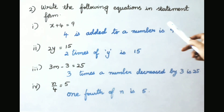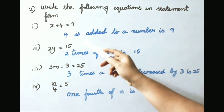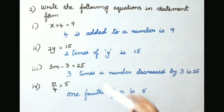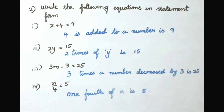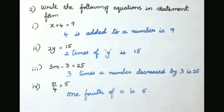Question 2: write the following equations in statement form. First, x plus 4 equals 9 — 4 is added to a number is 9. Second, 2y equals 15 — 2 times of y is 15. Third, 3m minus 3 equals 25 — 3 times a number decreased by 3 is 25. Fourth, n by 4 equals 5 — one fourth of n is 5.